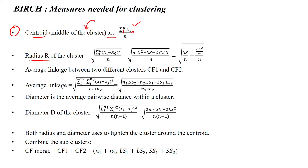The radius of the cluster will be calculated as the summation of (xi minus x0) whole square from i equal to 1 to n, divided by n. This will be transformed into the statistical matrix. We have seen that the statistical metrics are centroid, diameter, and radius. The radius is the squared sum divided by the number of data points in the cluster, and the linear sum divided by the number of data points in the cluster.